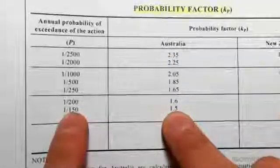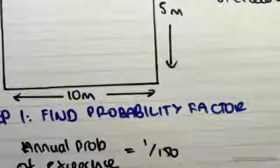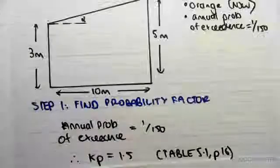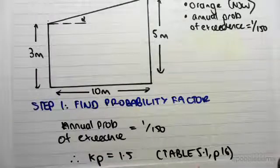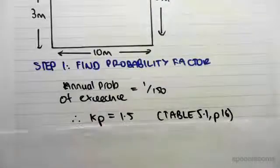Now our building is located in Orange, which is in New South Wales, which is in Australia. So one in 150 Australia gives us a kp of 1.5. So kp is 1.5 from Table 5.1, page 16.